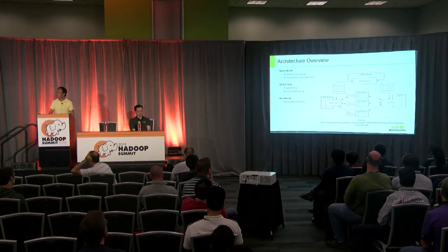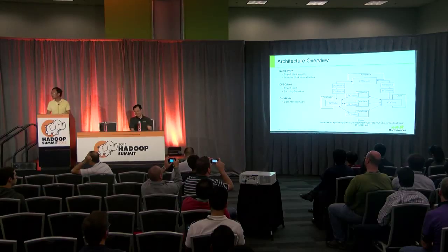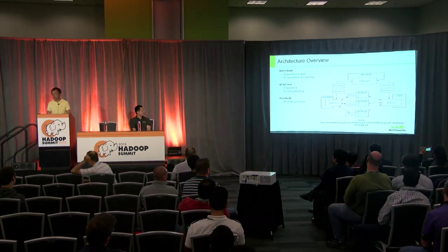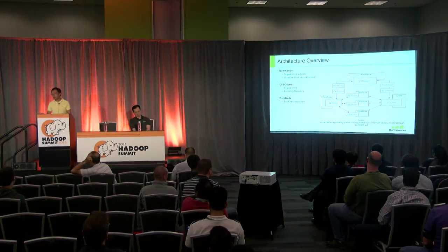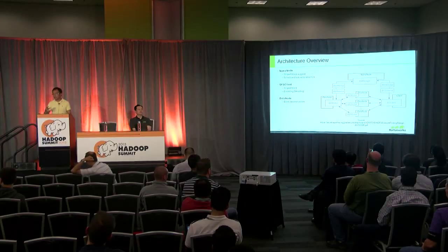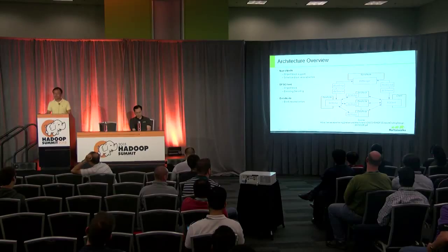The architecture requires changes throughout HDFS to support erasure coding. On the name node side, we need to support striped blocks and schedule block reconstruction. On the client side, we support striped blocks, do encoding on writes, and decoding on reads. On the data node side, the data node must understand block reconstruction commands from the name node, collect data and parity blocks from other data nodes, and perform reconstruction.